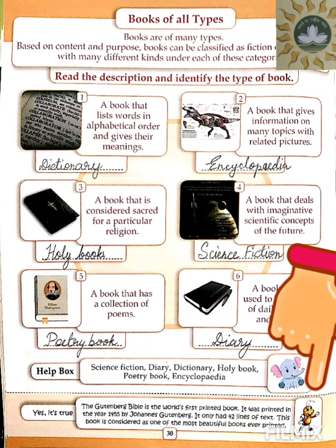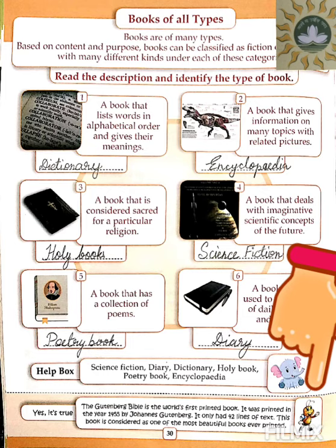Now children, as you can see below, you have the information shared by the bee. Yes, it's true — the Gutenberg Bible is the world's first printed book. It was printed in the year 1455 by Johannes Gutenberg. It only has 42 lines of text. This book is considered one of the most beautiful books ever printed. You can see the image of the Gutenberg Bible on screen.